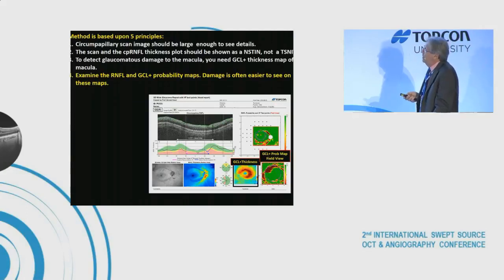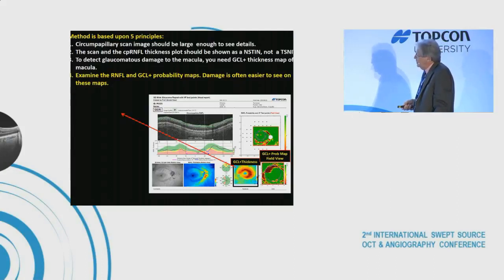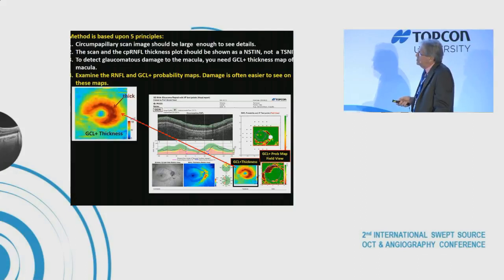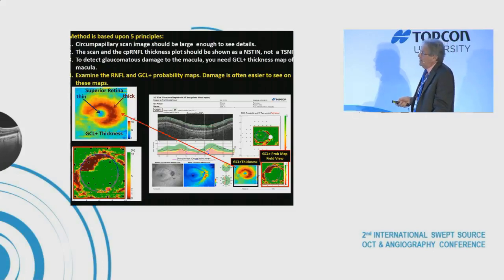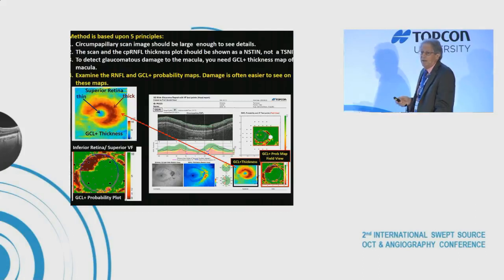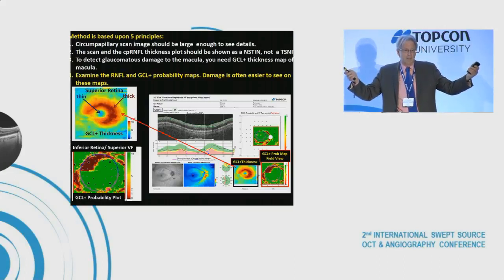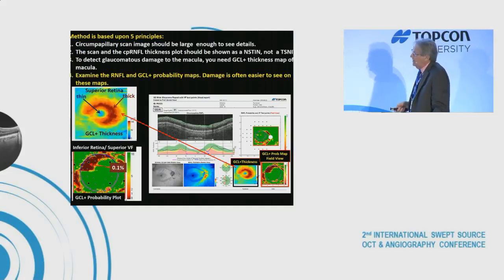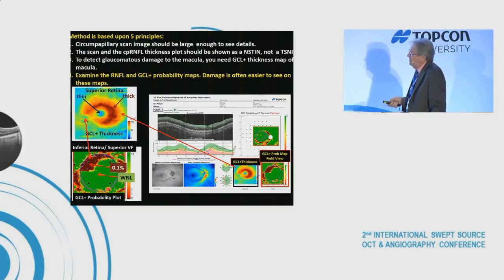Principle four: it's often easier to see damage with probability maps rather than thickness maps. The software compares thickness point-by-point to a group of age-adjusted normals and plots the probability. We flip it along the horizontal meridian to account for image inversion. Dark red is significant at 0.1%, red at 1%, yellow at 5%, and green at 10% — within normal limits. It's a continuous probability plot.